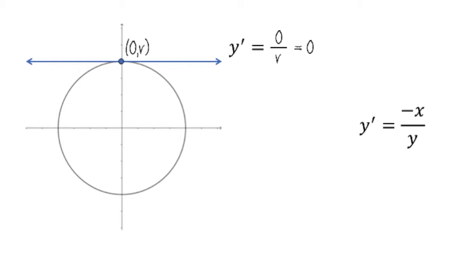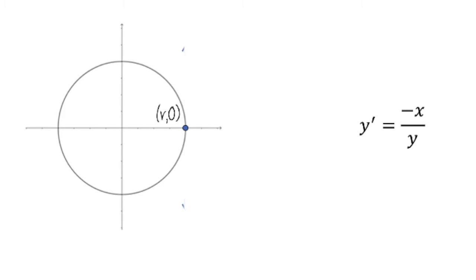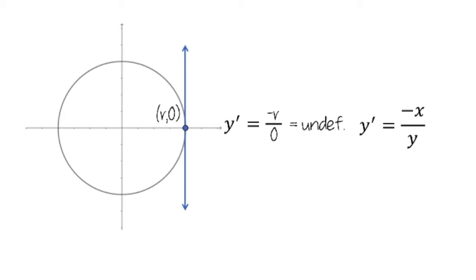What about another point? How about the point r, 0? Our formula says that the slope of this tangent line should be negative 1 times x divided by y coordinate, which is 0. Since the denominator is 0, the slope is undefined, which matches what we can see in the graph, that the tangent line should be vertical, and the slope of a vertical line is undefined.